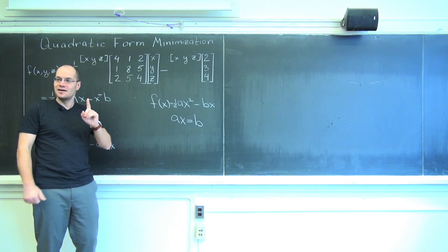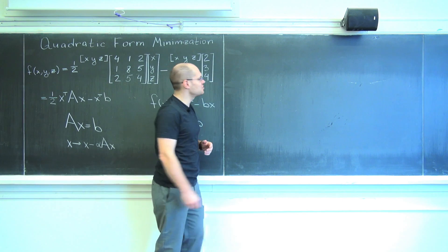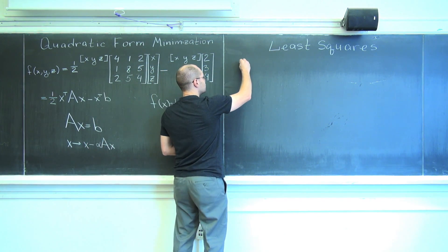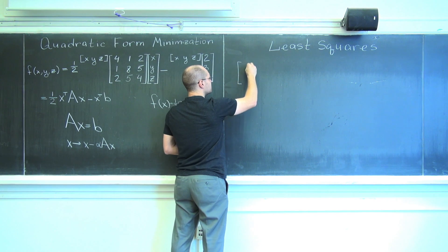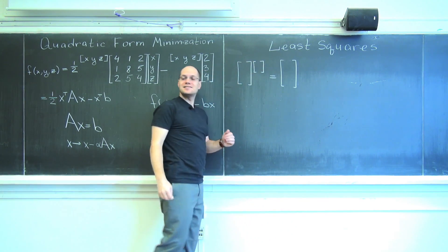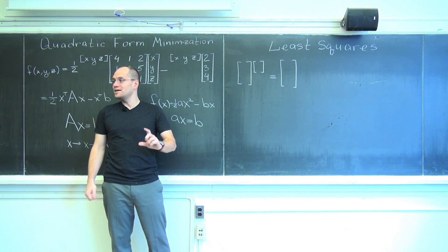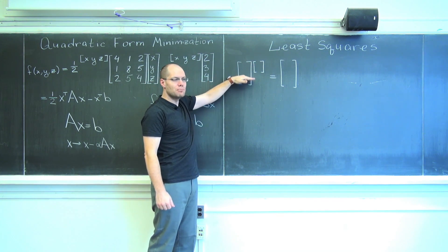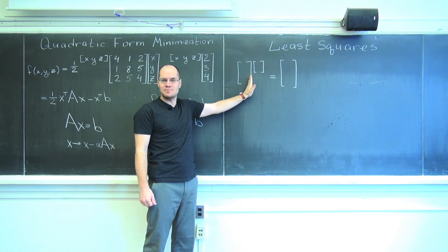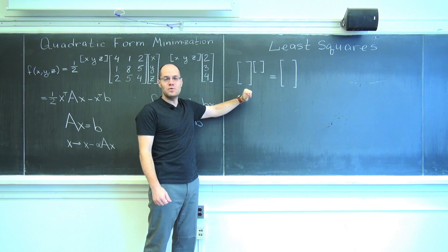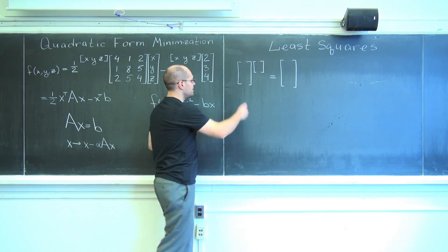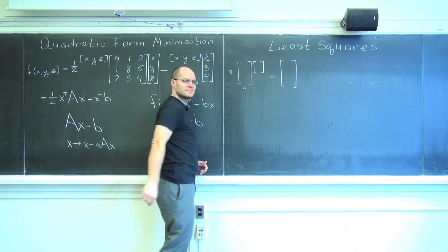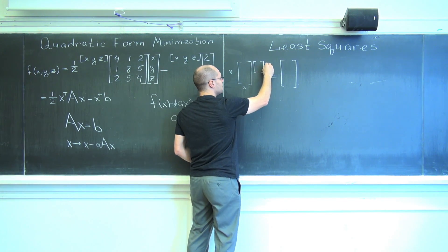So, least squares. Here's the problem I'm solving. Least squares will be an attempt to solve this problem as accurately as we can. Once again, we're dealing with a problem where there are more rows than there are columns. Let's add some numbers — suppose it's eight by three, so there are only three unknowns.